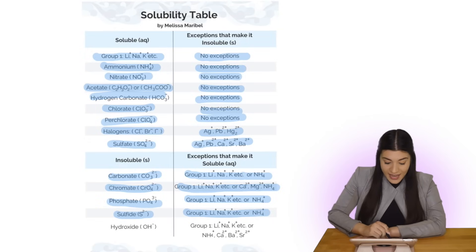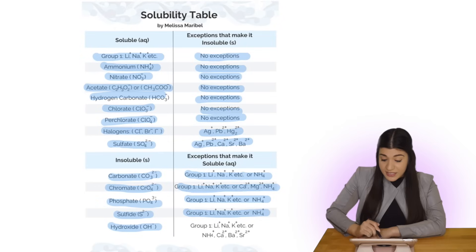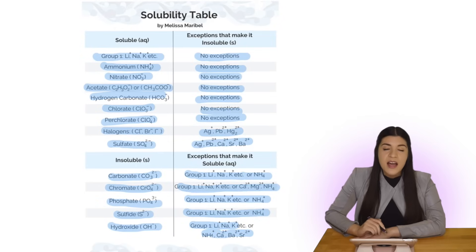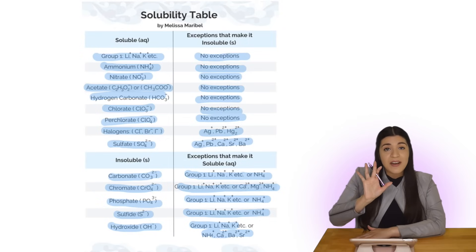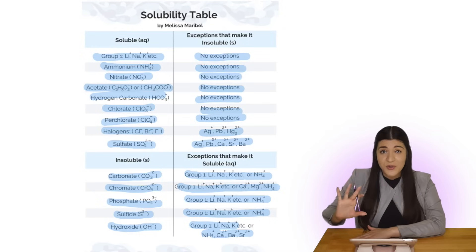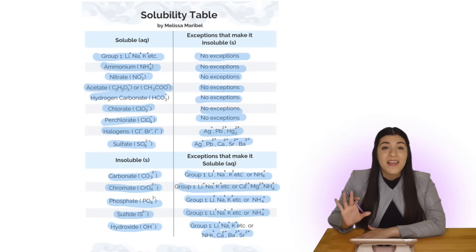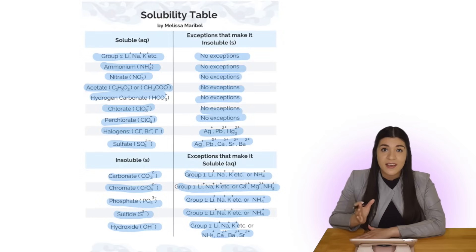Lastly, hydroxide — whenever it's attached to Group 1 metals, ammonium, or any of these other listed metals, then it's aqueous. But if it doesn't have that exception or that metal attached to it, then it's a solid.